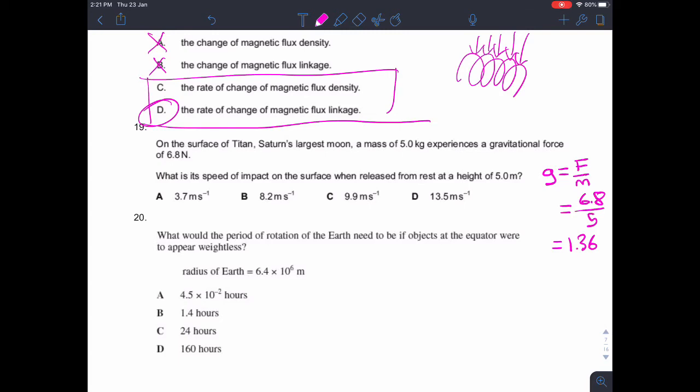So if G is 1.36, then the change in potential energy is MGH, and that is converted into kinetic energy. So the change in kinetic energy is 0.5 MV squared, and they equate. So 0.5 MV squared equals MGH. The M's can cancel. So V equals the square root of 2GH, where G is 1.36 and the height is given as 5 meters, which when you calculate it gives us an answer of 3.7 meters per second.